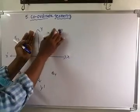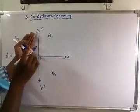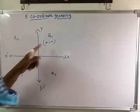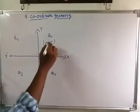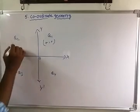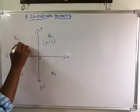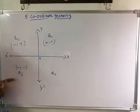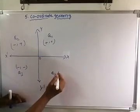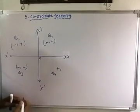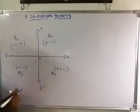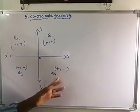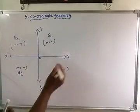In Q1, we plot points of the plus-plus type, where x is positive and y is positive. In Q2, x is negative and y is positive. In Q3, x is negative and y is negative. In Q4, x is positive and y is negative.